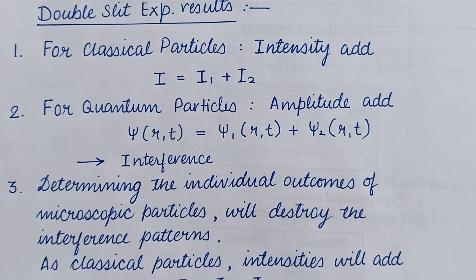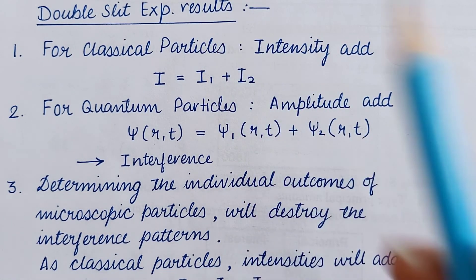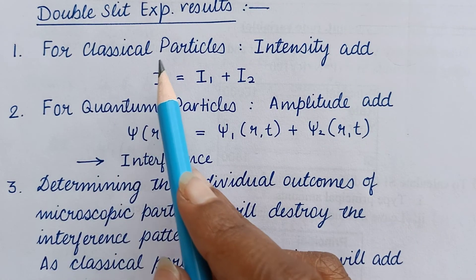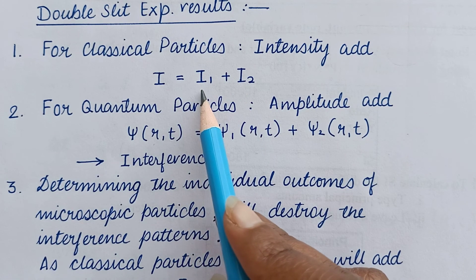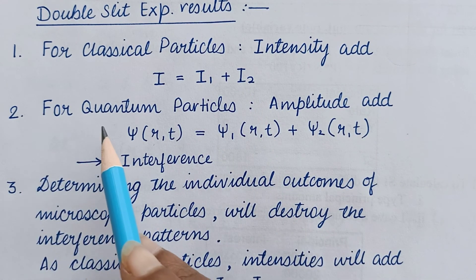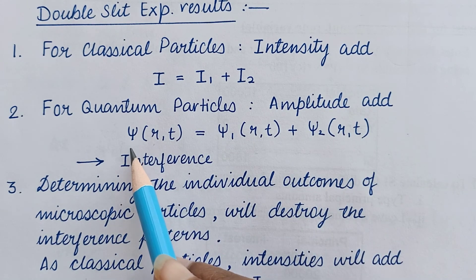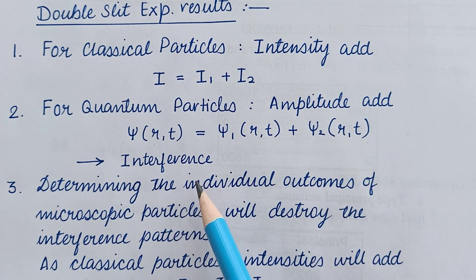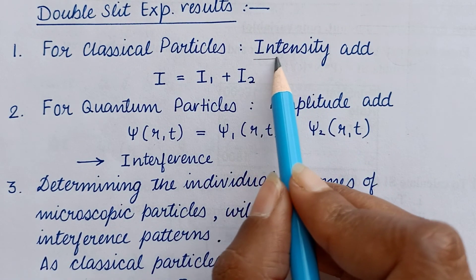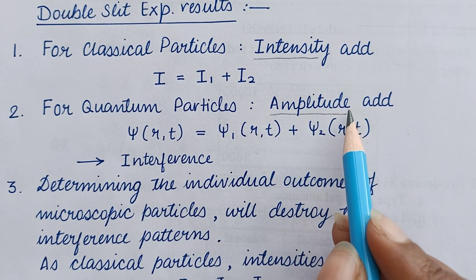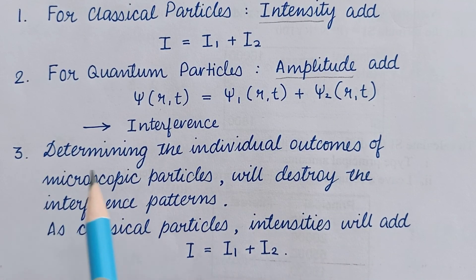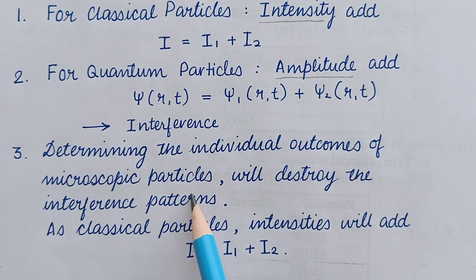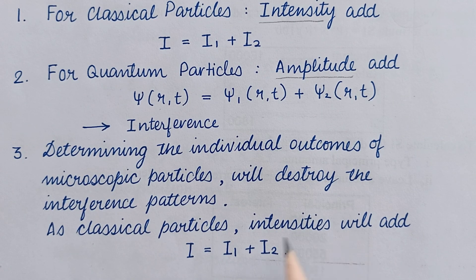Let us sum up the double slit experiment results in three principles. Number one: for classical particles, intensities add as I = I₁ + I₂. Number two: for quantum particles, amplitudes add as ψ(r,t) = ψ₁(r,t) + ψ₂(r,t), which gives rise to interference — in classical particles intensity adds, while in quantum particles amplitude adds. Number three: determining the individual outcomes of microscopic particles will destroy the interference pattern, and then as with classical particles, intensities will add as I = I₁ + I₂.